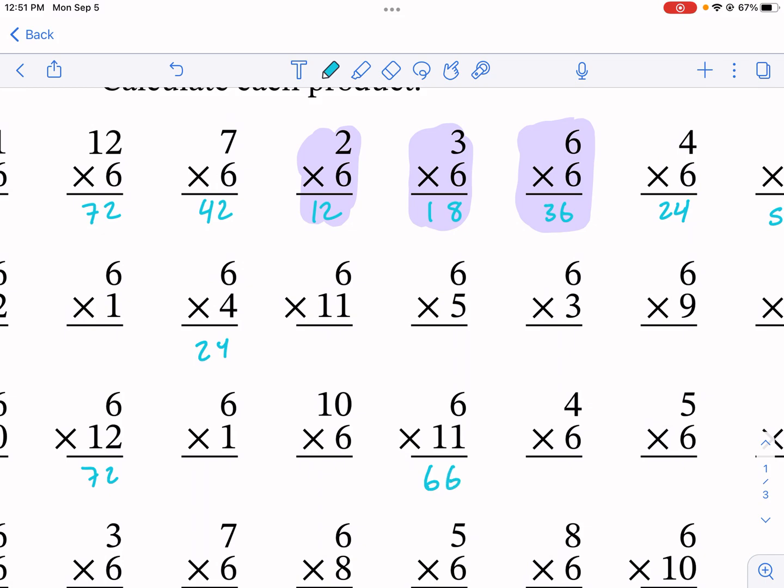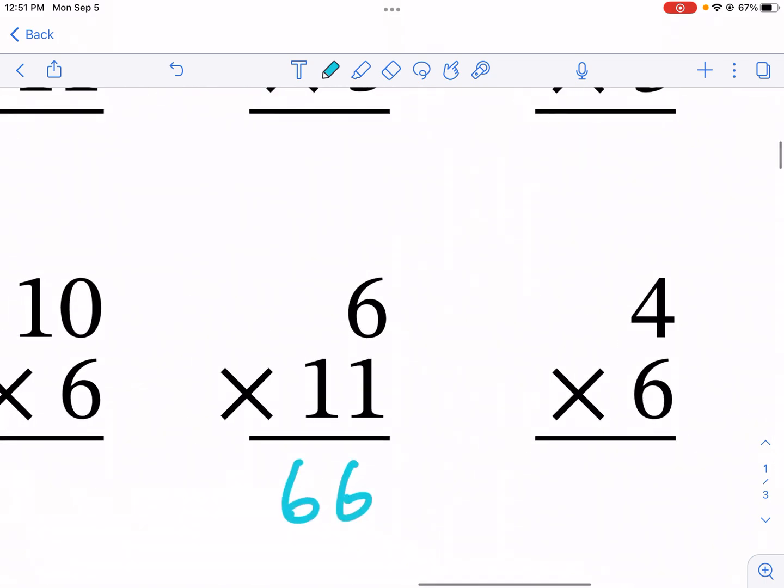So we have 24, I'm just kind of going around here. We have not done 66 yet, so we do, well actually standard algorithm requires the bigger number on top, so we do six times one is six and then six times one is also six, so 66.